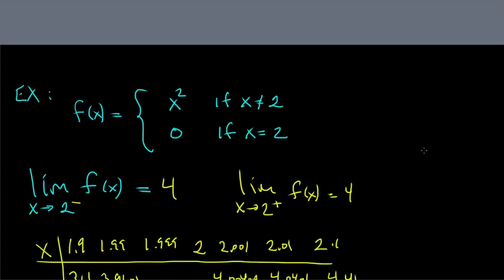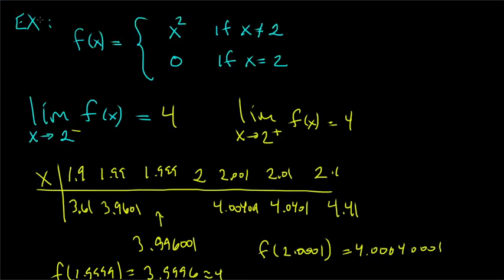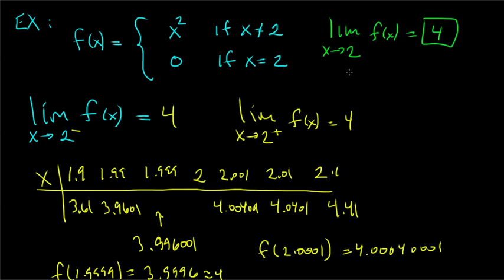We can say for sure: the limit as x approaches 2 of f(x) is 4. But when you plug in 2, you get f(2) = 0 — that's not the same as the limit. So you don't calculate the limit by just plugging in the number. It may work in some cases, but not in this one.